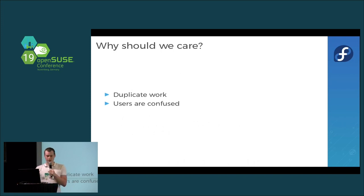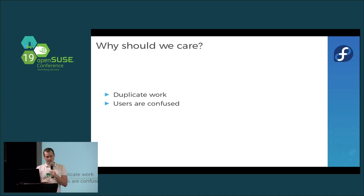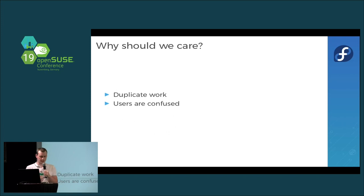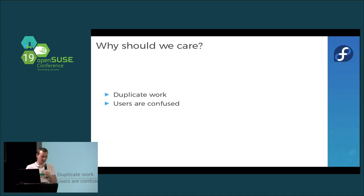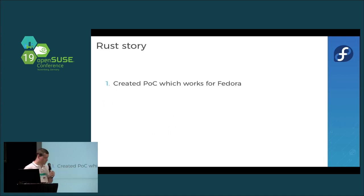Why do we care about all this? First, we don't want people to duplicate work. People can spend time on writing automation tools, improving generators like rust-rpm or gem-to-rpm, or working on infrastructure instead of doing monkey work by rewriting spec files between distributions. Users are also confused when they switch distributions and can't find a familiar package. And for upstream developers, they need ten different ways of describing which dependencies are needed to build their package.